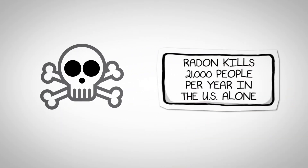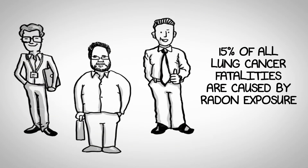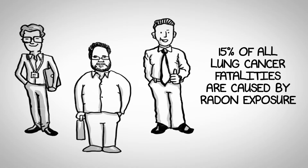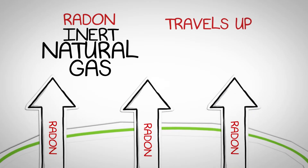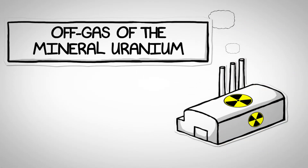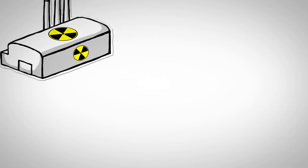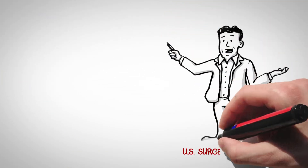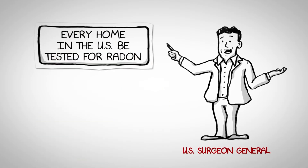Radon kills 21,000 people per year in the U.S. alone. Health professionals across the world agree that roughly 15% of all lung cancer fatalities are caused by radon exposure. Radon is an inert, naturally occurring radioactive gas that travels up out of the soil. It's an off-gas of the mineral uranium, which people mine for use in nuclear power plants and nuclear weapons. The U.S. Surgeon General advises every home in the U.S. to be tested for radon, regardless of the location.